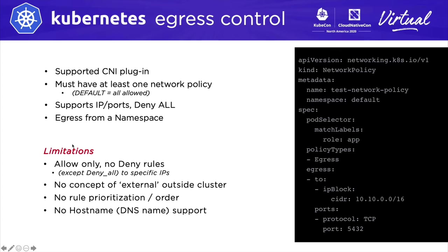There are some limitations. You can only allow specific egress — there's no concept of deny to a specific IP. So if you've got a block of IPs that are in allow, you can't then deny specific IPs within those allows. There's no concept of external outside of the cluster, so you have to specifically allow connections outside of the namespace and then separately to specific services. There's no concept of rule prioritization or order, and there is no hostname or DNS support.